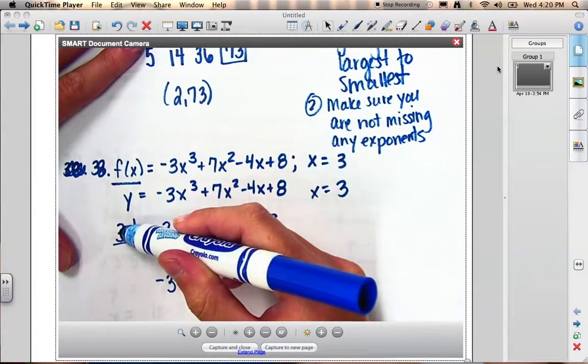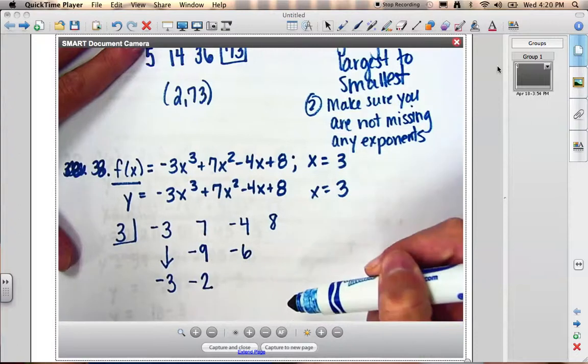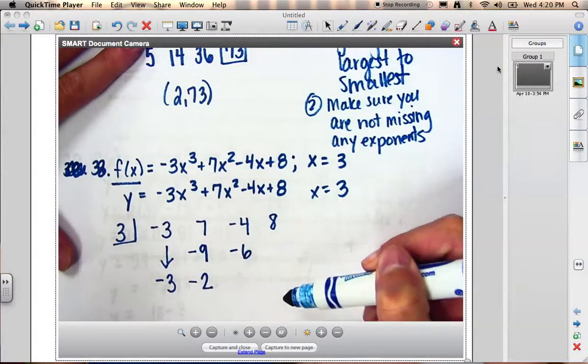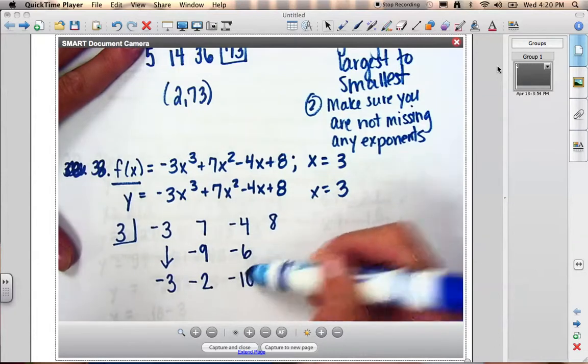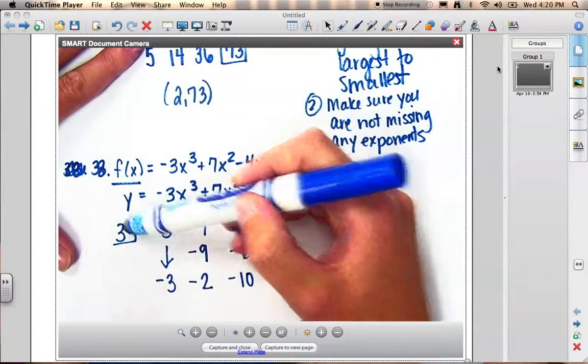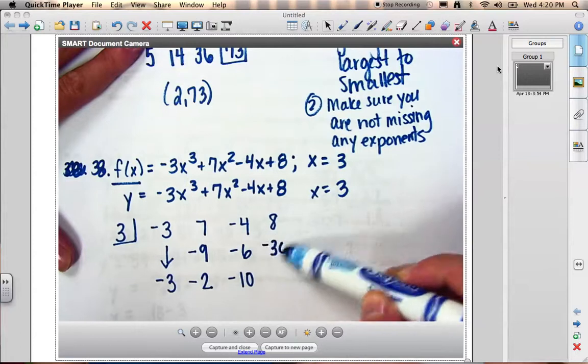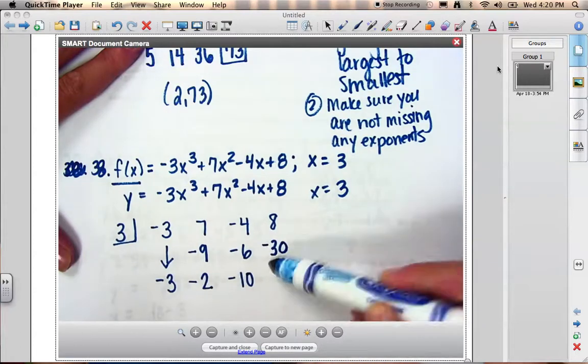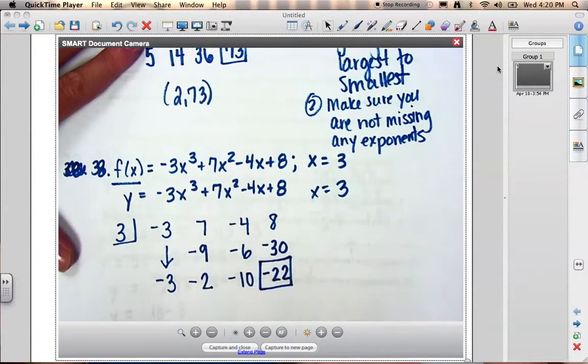Then I'm going to multiply again. 3 times negative 2 is negative 6. Put that under the negative 4. Negative 4 plus negative 6 is negative 10. I'm going to do it one more time. So I get 3 times negative 10 is negative 30. When I add those two together, I get negative 22. You're going to box that last answer.